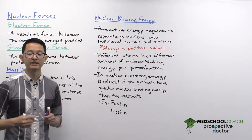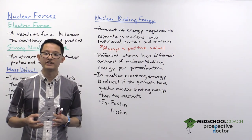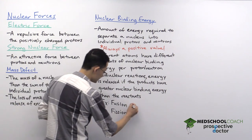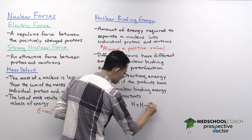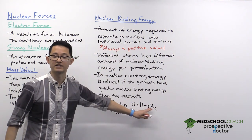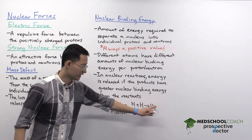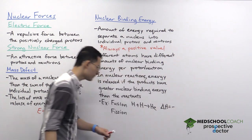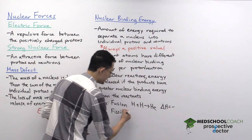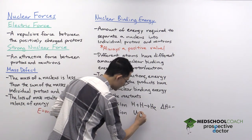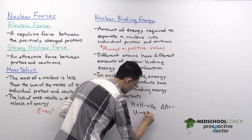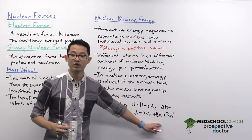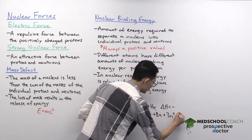For nuclear fusion to release energy, you must start with atoms whose nuclei are smaller than iron, since they have less nuclear binding energy per nucleon. For example, two hydrogen atoms can be fused to form helium — the helium nucleus has more nuclear binding energy per nucleon than the hydrogens, so the products have more binding energy than the reactants, making this exothermic. Similarly, in fission, starting with an atom larger than iron — such as uranium being split into krypton, barium, and a few neutrons — also yields products with more nuclear binding energy, making that process exothermic as well.